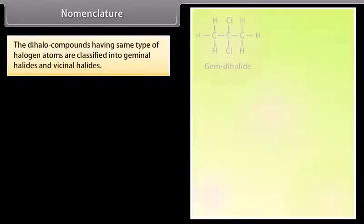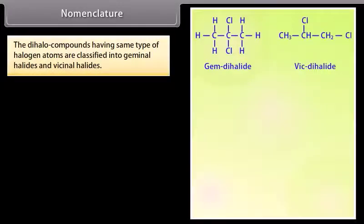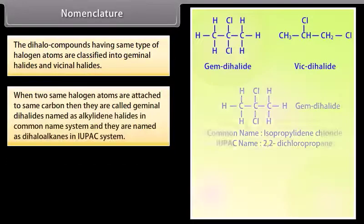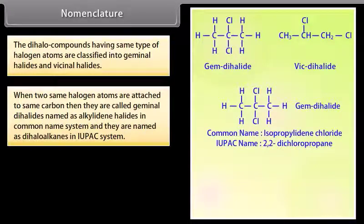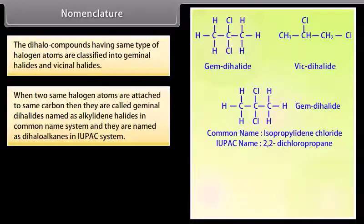Dihalogen compounds having the same type of halogen atoms are classified into geminal halides and vicinal halides. When two identical halogen atoms are attached to the same carbon, they are called geminal dihalides, named as alkylidene halides in the common name system, and as dihaloalkanes in the IUPAC system.